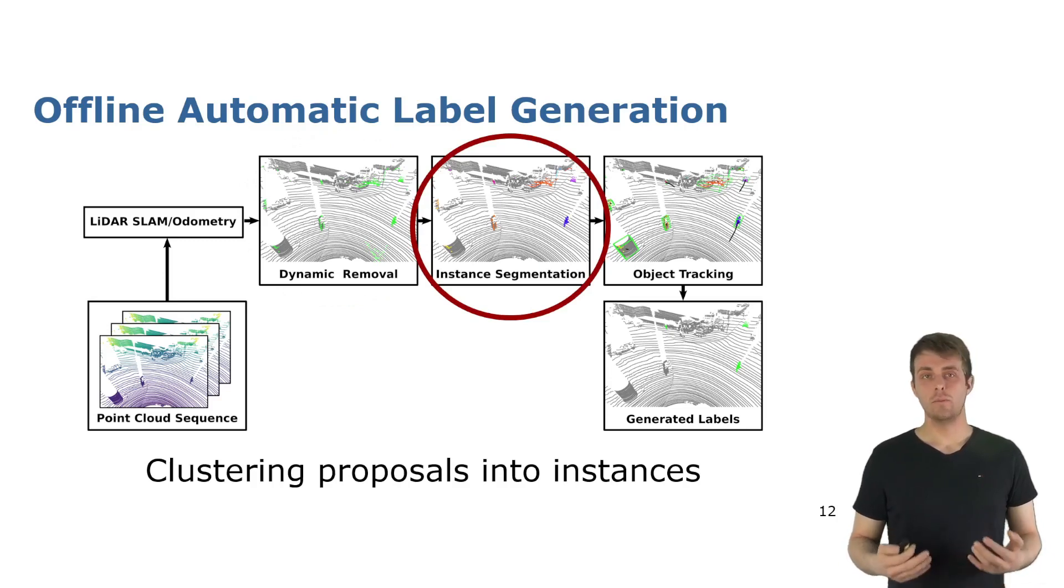Since these are just points that we segmented into moving and non-moving candidates we next want to find instances. So we apply instance clustering to get more refined moving object proposals. To do this we use a clustering method called HDBScan which is density based and applies hierarchical clustering.